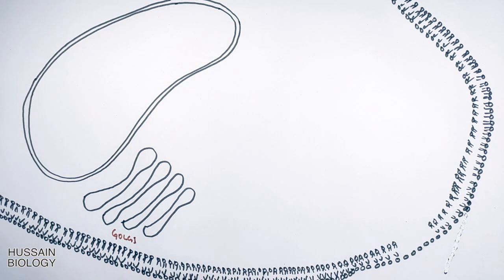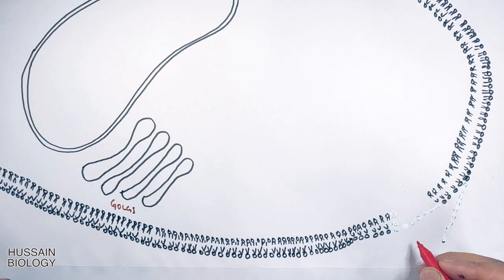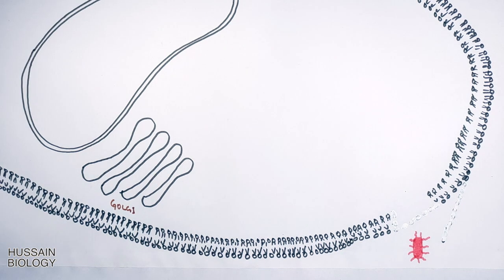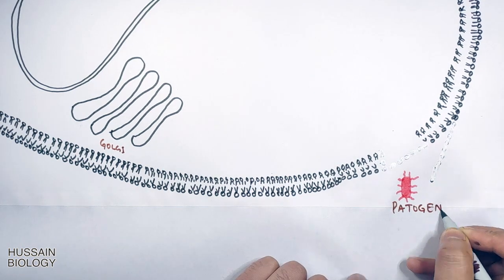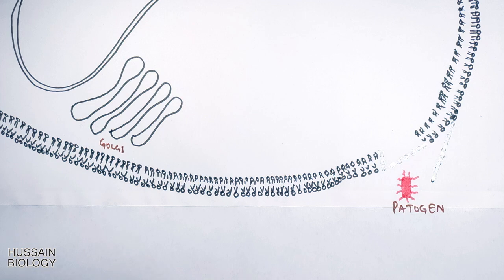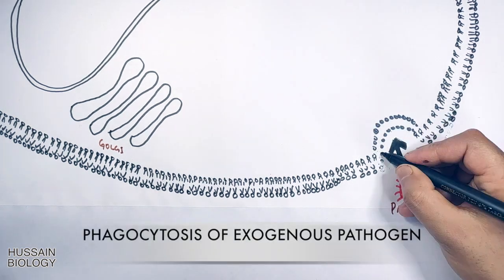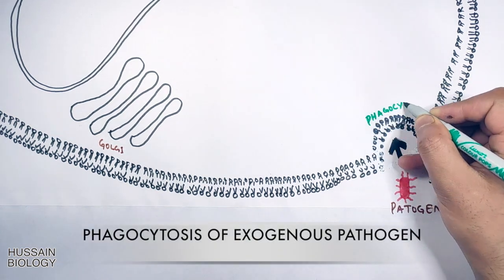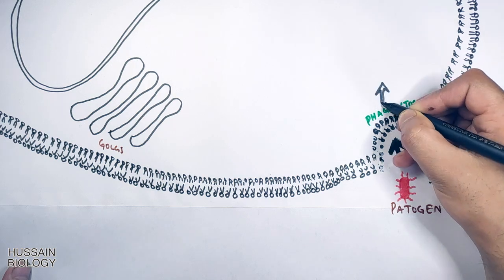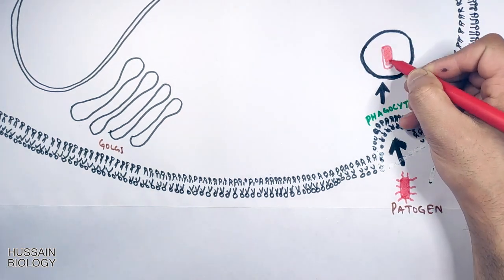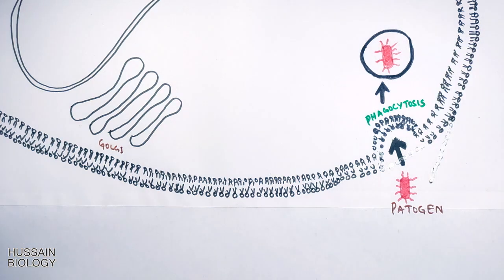In the exogenous pathway the antigen is taken inside the cell when it makes contact with the plasma membrane. In the diagram we can see the pathogen comes in and the cell drives the phagocytosis of the pathogen. The cell membrane protrudes inside and forms the phagosome. So now we have this pathogen inside the phagosome.